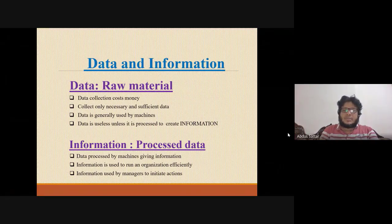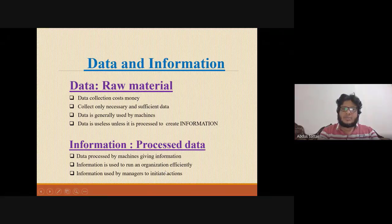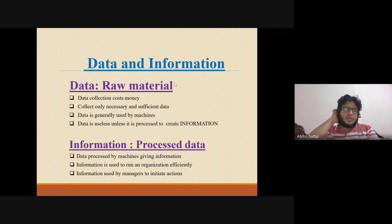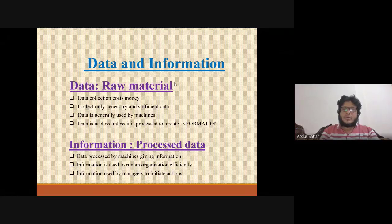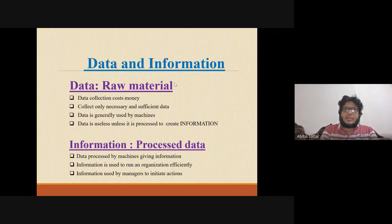The first concept is data, which comes from raw materials. For example, student name data, student age data, and student ID data are all examples of raw data.